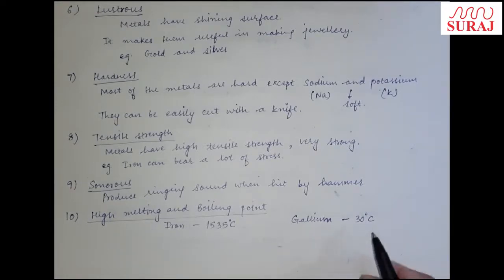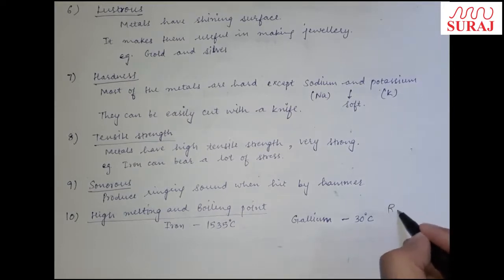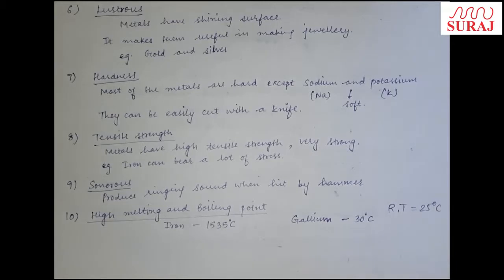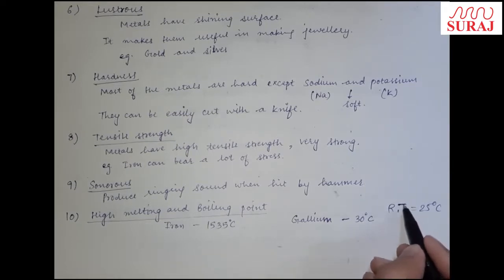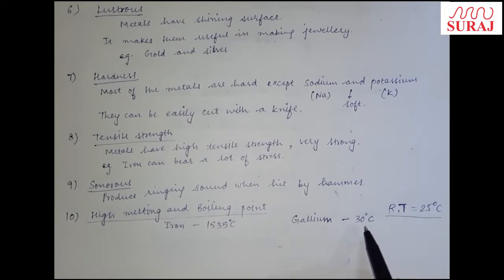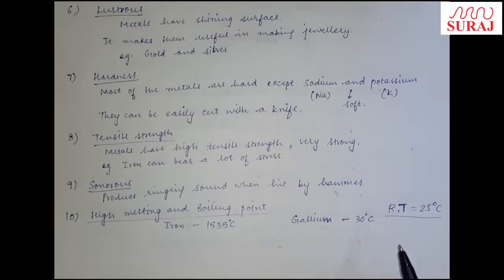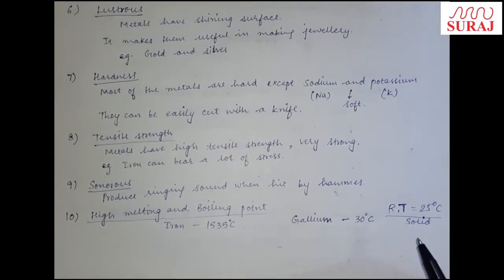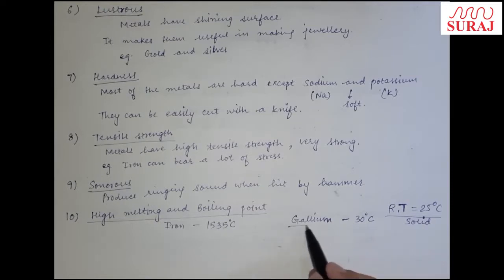Gallium room temperature (25°C) पर solid होता है क्योंकि इसका melting point 30°C है। Science में room temperature हमेशा 25 degree Celsius लेते हैं। लेकिन जैसे ही तुम gallium को अपनी palm पर रखते हो, body temperature 37°C होती है — जो melting point से ऊपर है — तो gallium melt हो जाता है। यह एक ऐसा metal है जो palm पर रखते ही melt हो जाता है।